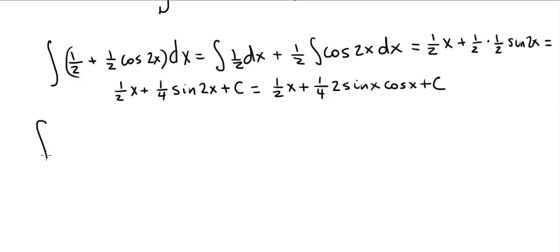That is, the integral of cosine squared of x can be expressed as 1 half x plus 1 half times sine x times cosine x plus c.